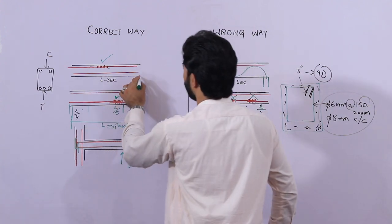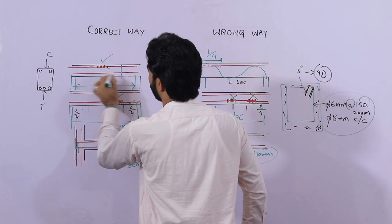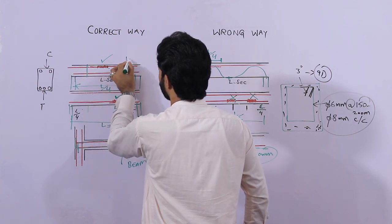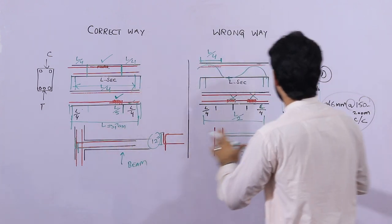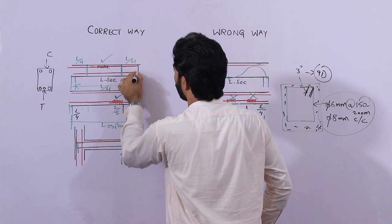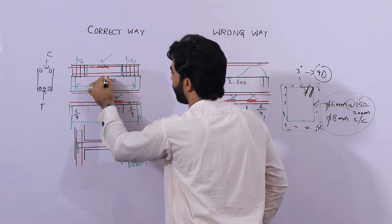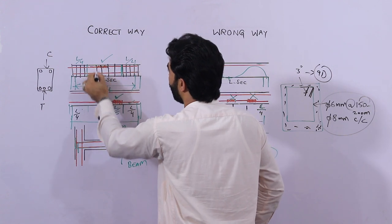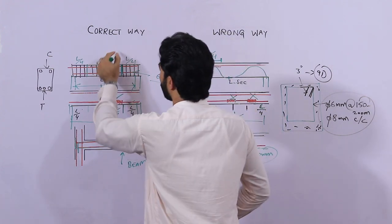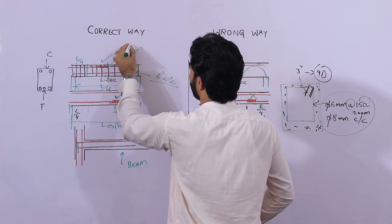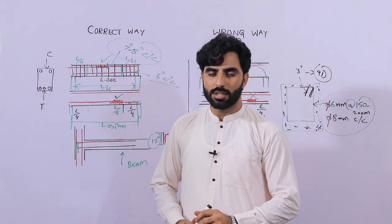Regarding stirrup spacing: these are the two columns and this is the span between them. At the L/4 zone from each support, we have negative bending moment — to resist it, stirrups should be placed closely. At the L/4 distance from the support, keep stirrup spacing about 6 inches center-to-center. After L/4, toward the mid-span, you can increase the spacing to 7 to 8 inches, since there is no negative bending moment at mid-span. Be careful especially about stirrup spacing. Hope this short video helps — thanks for watching, goodbye.